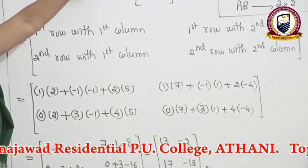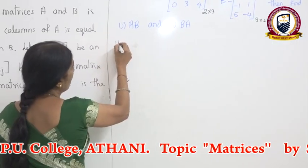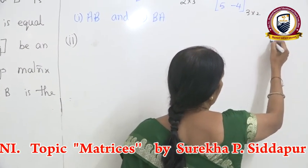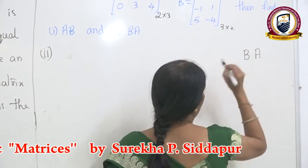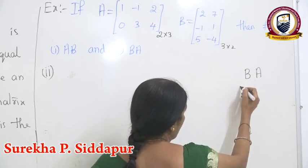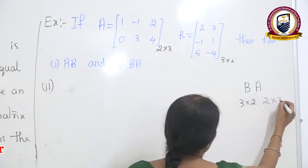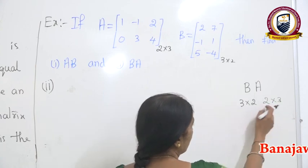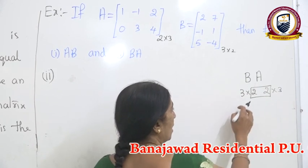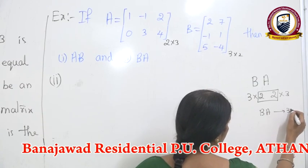We have a second question — BA. Before multiplying, first check whether the multiplication is possible. Write B and A side by side and write their orders. B has order 3 by 2 and A has order 2 by 3. See these adjacent numbers — 2 and 2. If they are equal, you can go for the multiplication. The resulting matrix BA has order 3 by 3.